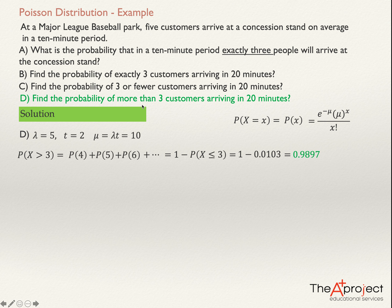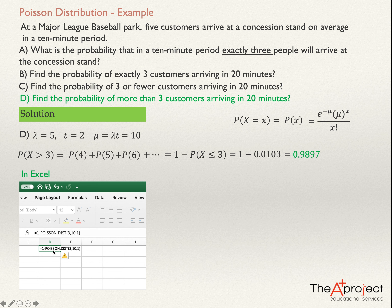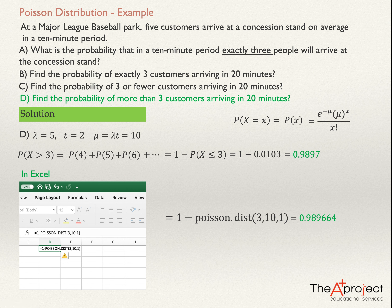That's the way you work using a formula or Excel. If you are using Excel, you can type the whole thing directly: one minus POISSON.DIST. So type: equals one minus POISSON.DIST, three, ten, one, and press Enter. Excel gives you the same answer: 0.989664. And that concludes my explanation of this problem. Thank you.